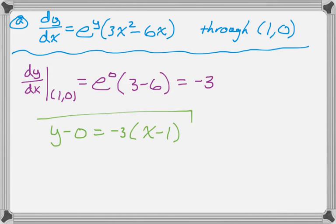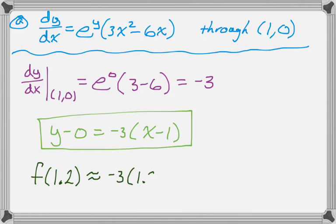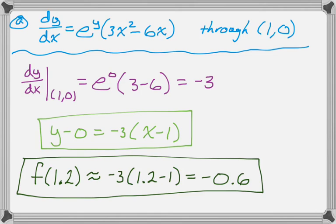So y minus 0 equals negative 3, the quantity x minus 1. And then what I do is I'm told to approximate f of 1.2. So that's not very hard to do. What I'm guessing is they want to see an approximately equal to sign. So f of 1.2 is approximately negative 3 times 1.2 minus 1, which you could stop at, or you could go with negative 0.6.